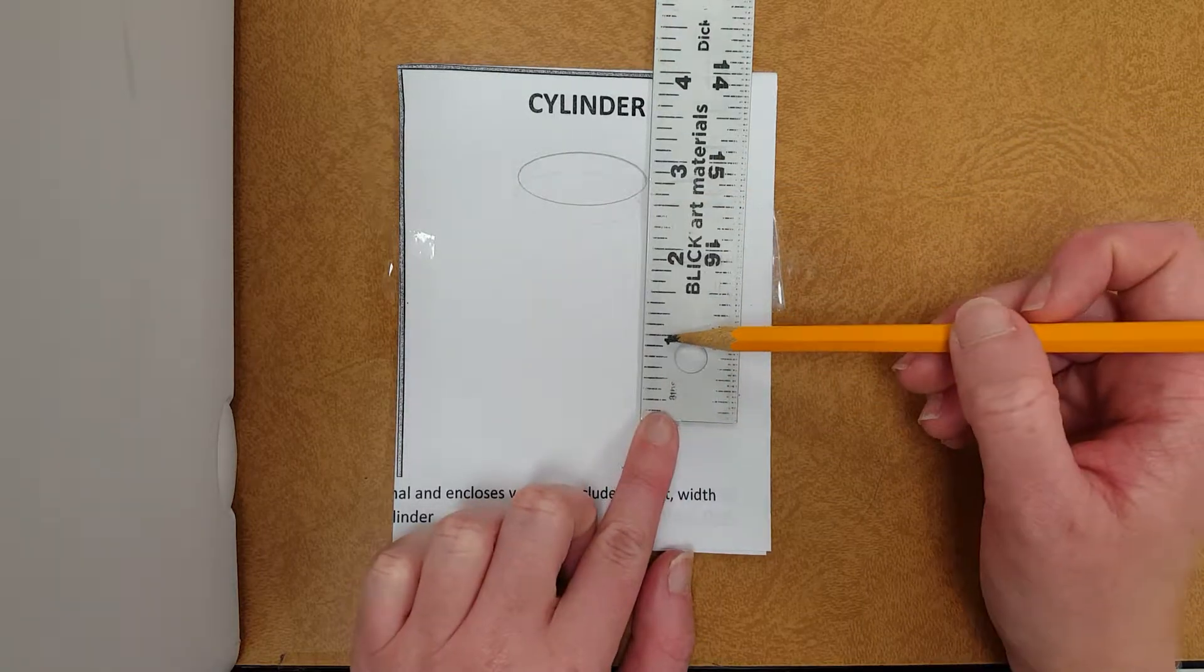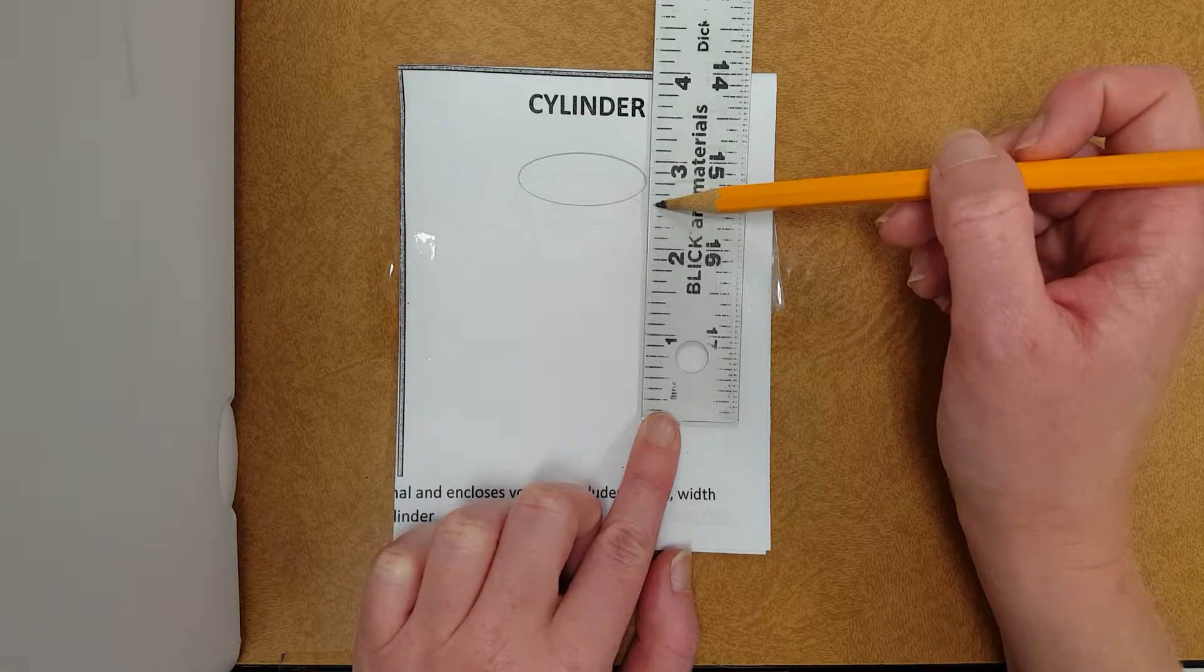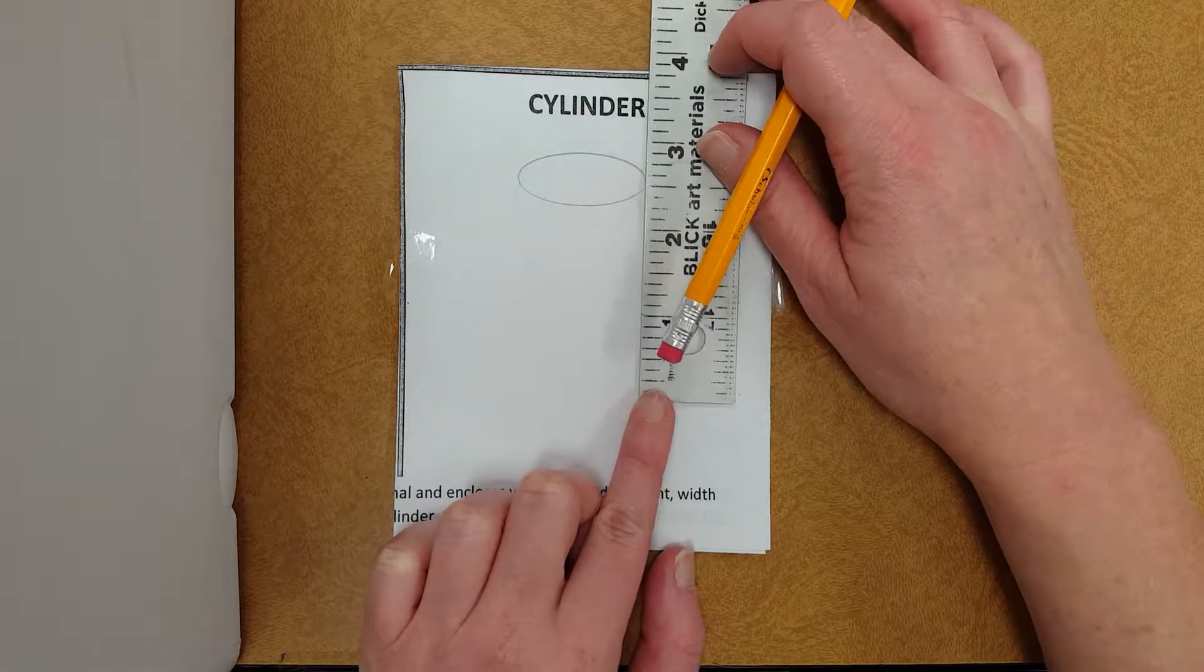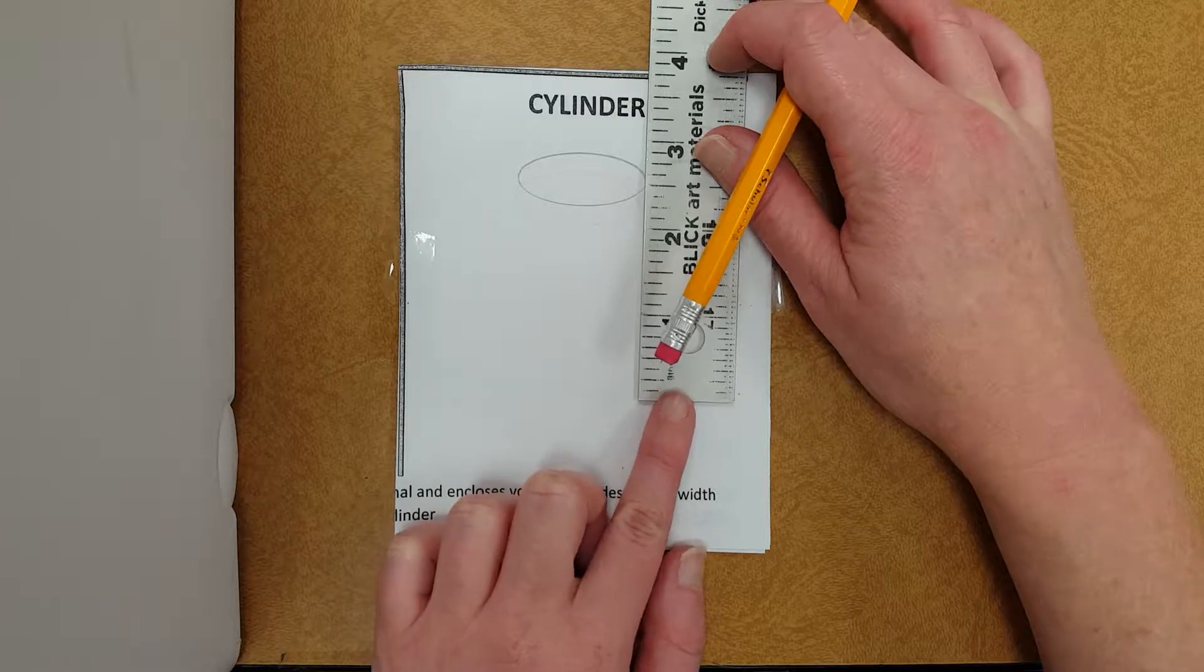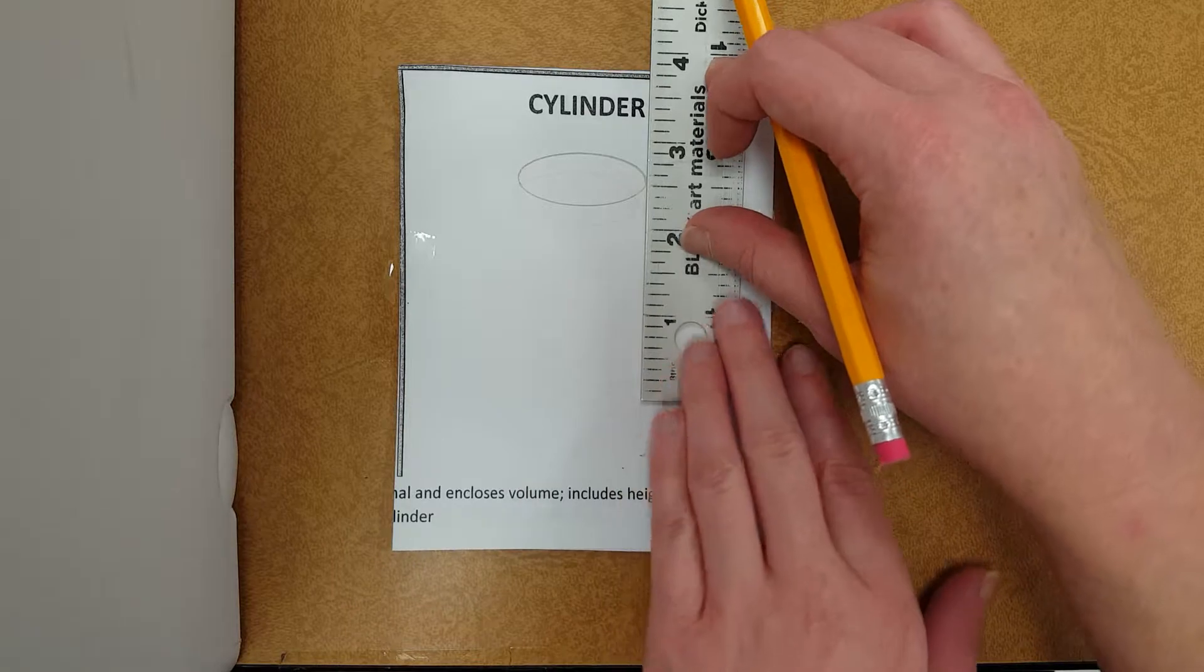So this is where my ruler starts. This is the one inch mark, the two inch mark, this is the three inch mark. I think I want to use this half inch one right here. So this will give me two and a half inches worth of awesome cylinder.